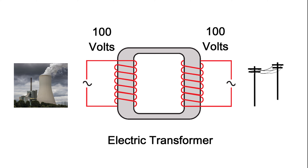Direct current does not travel over wires very well. Although wires are designed specifically to carry electricity, that doesn't mean they don't have resistance — there's a lot of resistance in there. Current, which many would say is the most important part of electricity, tends to get bogged down in that resistance.